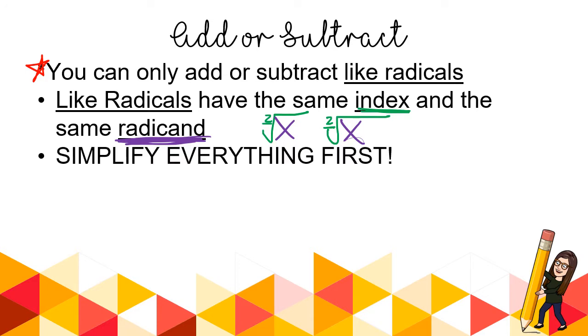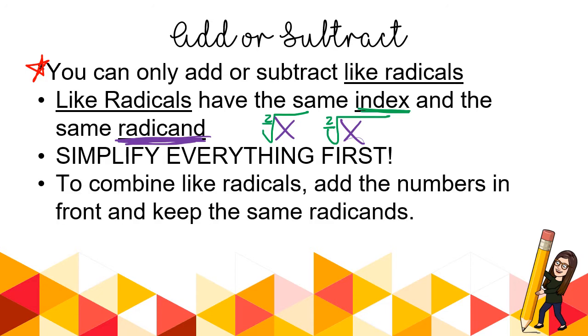Always, always to make your life easier, simplify everything first. What do I mean? If you can simplify the radical down, do so. If you can multiply any numbers out front, do so. Anything you can do that you've already learned first, do that first. So to combine, here's the rule. To combine like radicals, you add the numbers in front and you keep the same radicands.